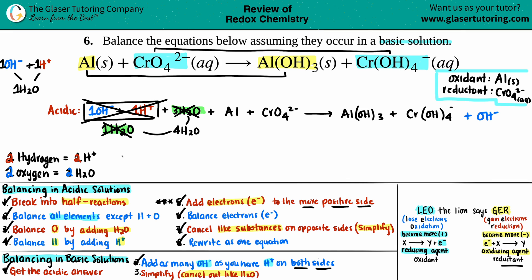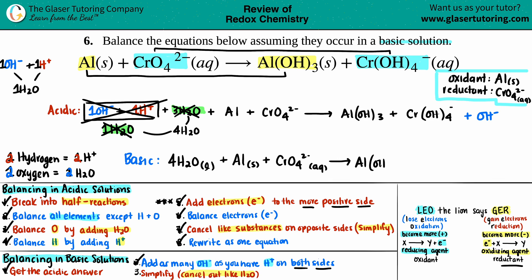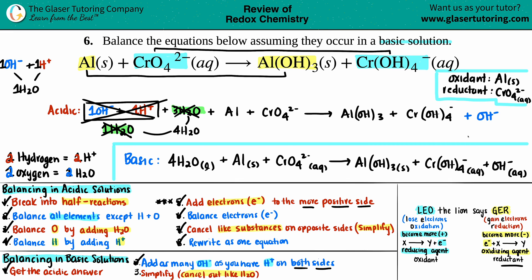Now add back the states for the final basic answer: 4H₂O(l) + Al(s) + CrO₄²⁻(aq) yields Al(OH)₃(s) + Cr(OH)₄⁻(aq). The hydroxide ion also carries a charge, so it's aqueous as well. That is your final answer.